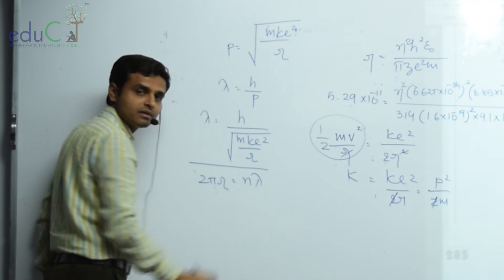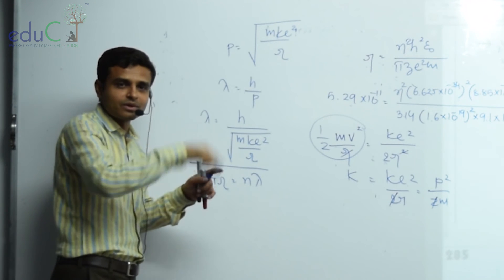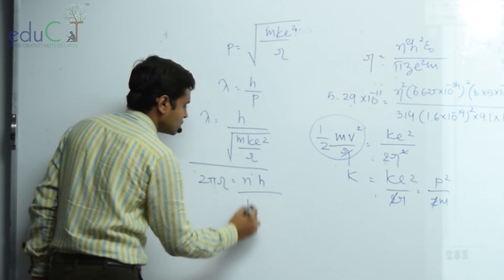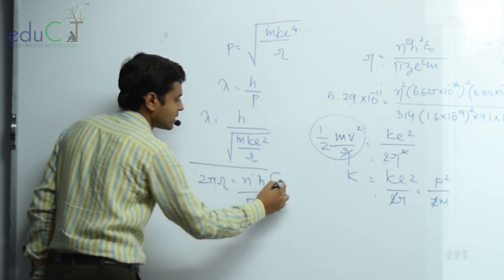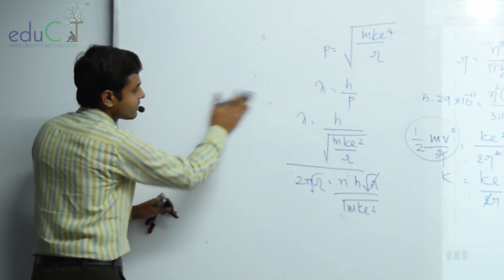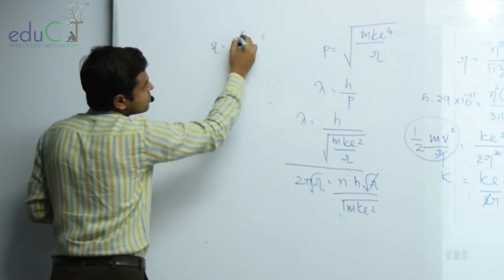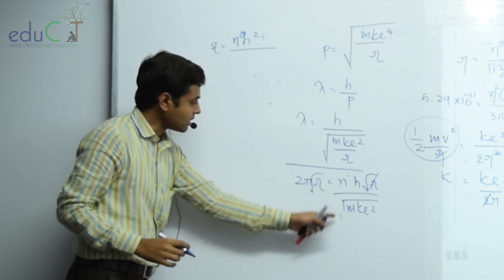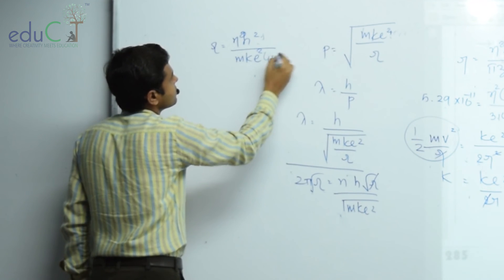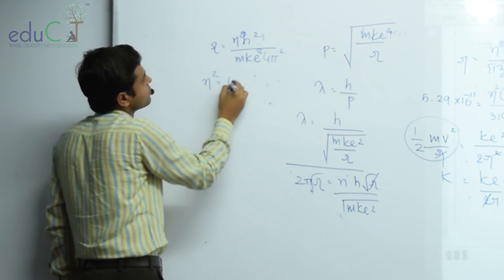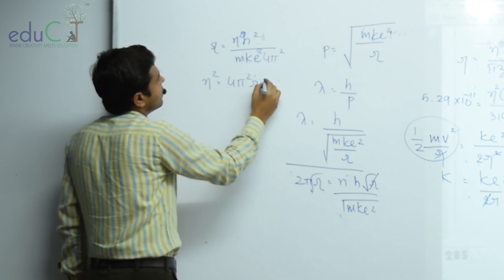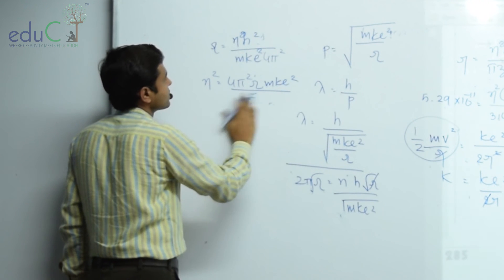2 pi R equals n lambda. So lambda equals H upon under root of M K e² upon R, giving lambda equals H upon R times under root of M K e² upon R. And H squared equals 4 pi squared M K e² upon n squared, times x squared — so n squared equals 4 pi squared.